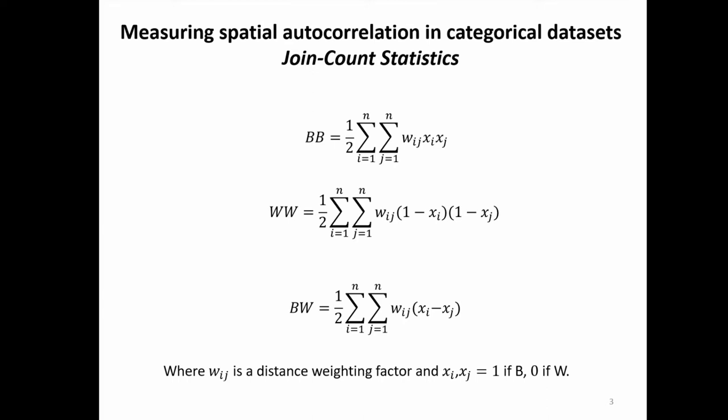There is a well-established statistic called joint count statistics, which explores global spatial autocorrelation for categorical variables — namely BB or WW, because the idea is that you have black cells and white cells. If black cells are closer to each other than expected, you have autocorrelation. If black and white cells are closer to each other than expected, you have negative autocorrelation or no autocorrelation.